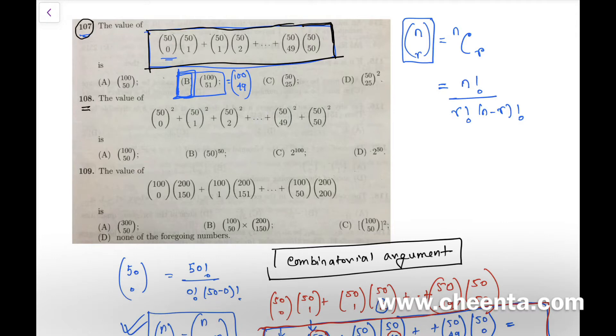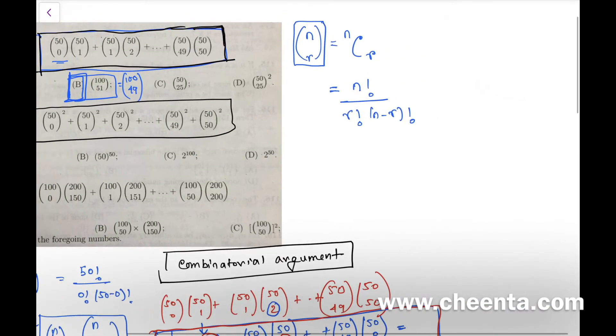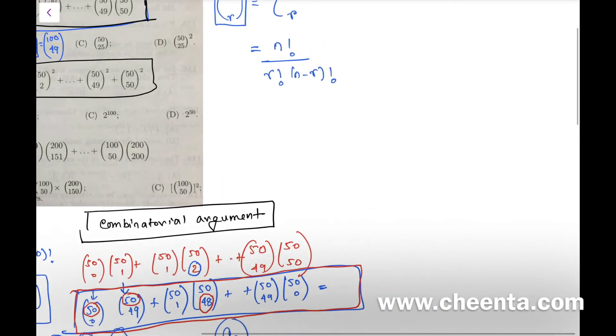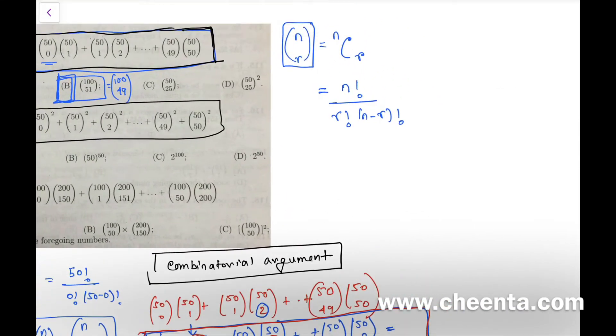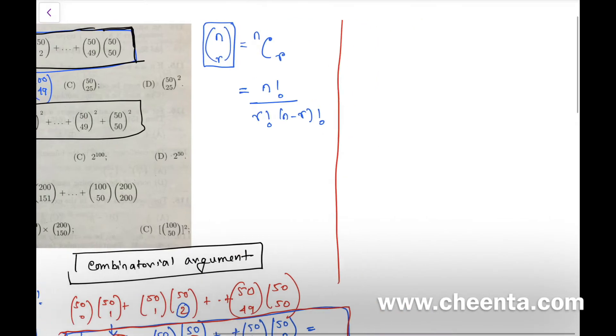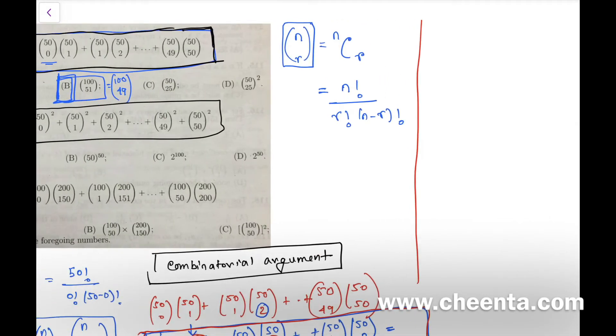Problem number 108 will closely follow from problem 107. It again gives us a series of binomial coefficients—this time it looks a little bit more enchanting: it's square of binomial coefficients. Let's see how we can handle it. It has (50 choose 0) squared up to (50 choose 50) squared.